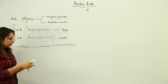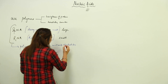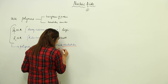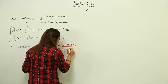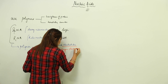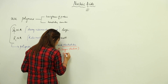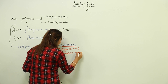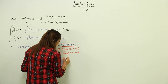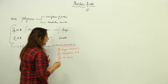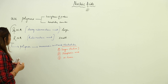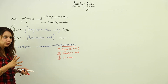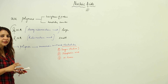So now we will see what a nucleotide actually is. A nucleotide consists of three things: a sugar — typically a pentose sugar — a phosphoric acid or phosphate group, and nitrogenous bases. DNA and RNA are both formed of these three components: the pentose sugar, phosphoric acid, and nitrogenous bases.